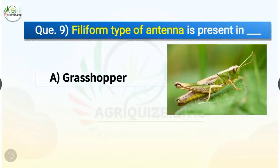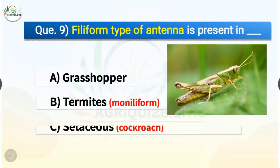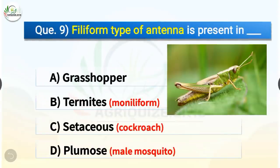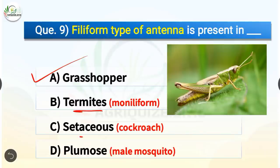Question number 9. Filiform type of antenna is present in which insect? The options are grasshopper, termites, setaceous, or plumose. The correct answer is option A, grasshopper. Filiform type of antenna is present in grasshopper, whereas moniliform type is in termites, setaceous type is in cockroach, and plumose type is in male mosquito.